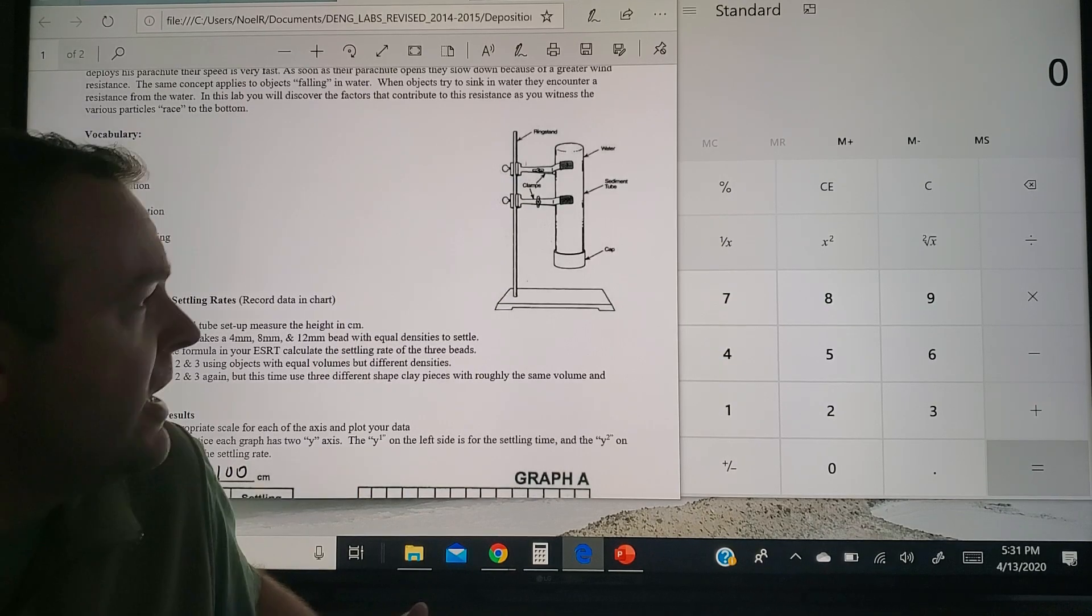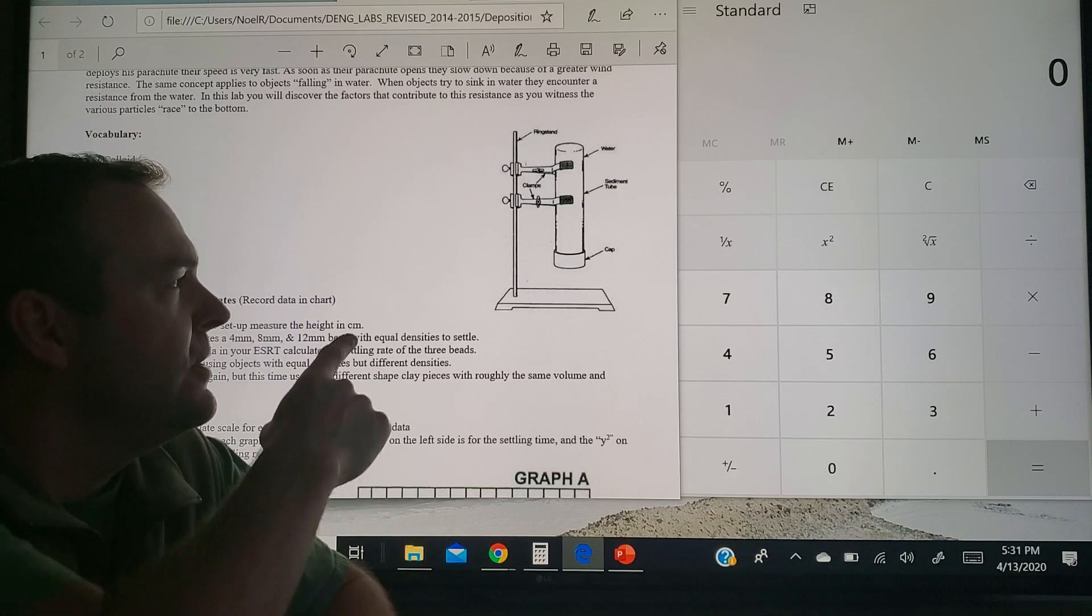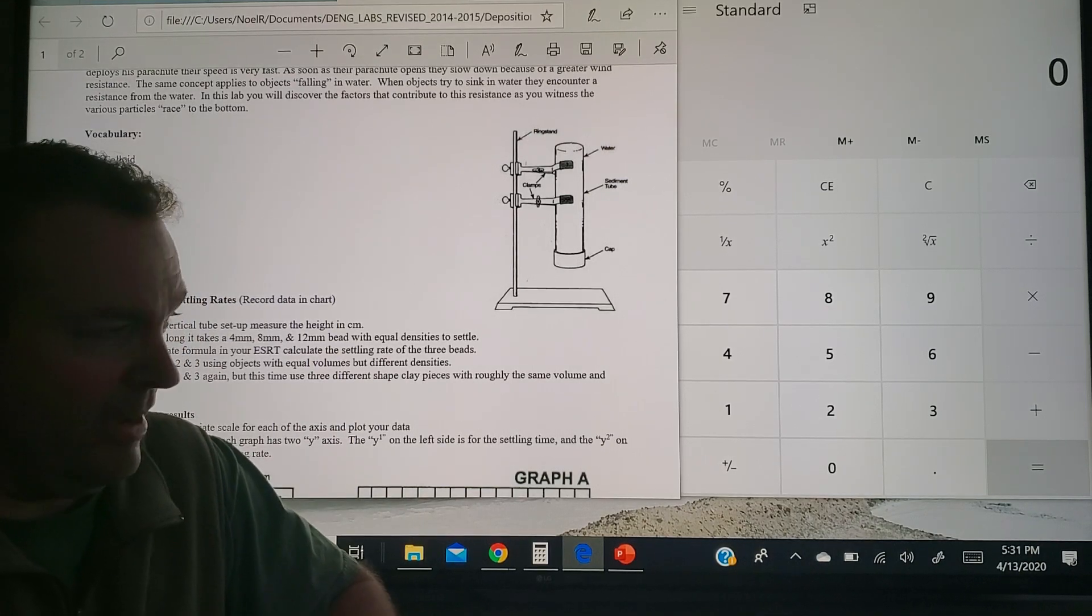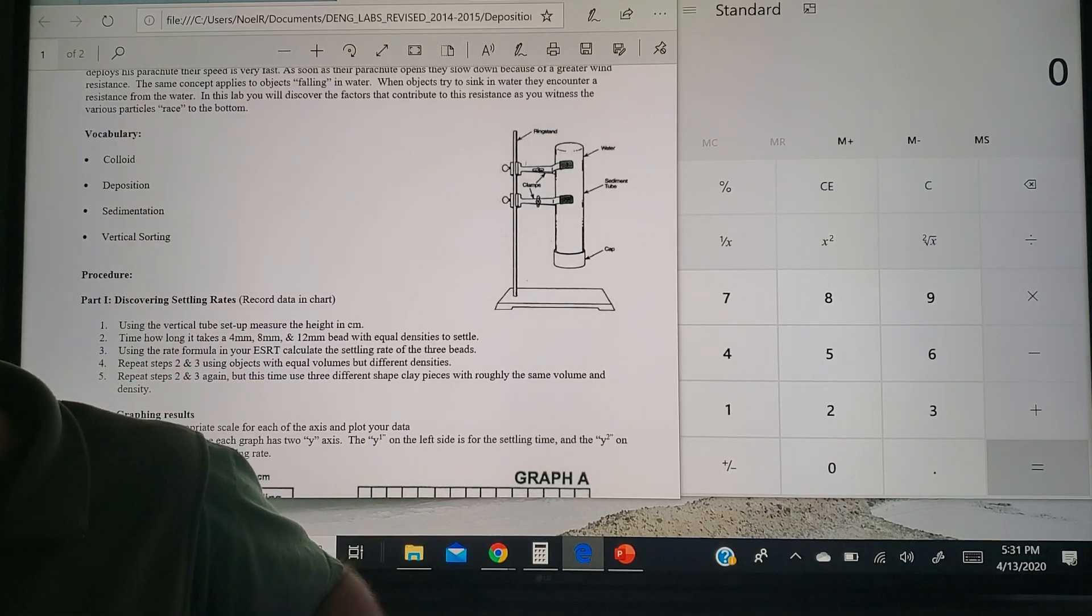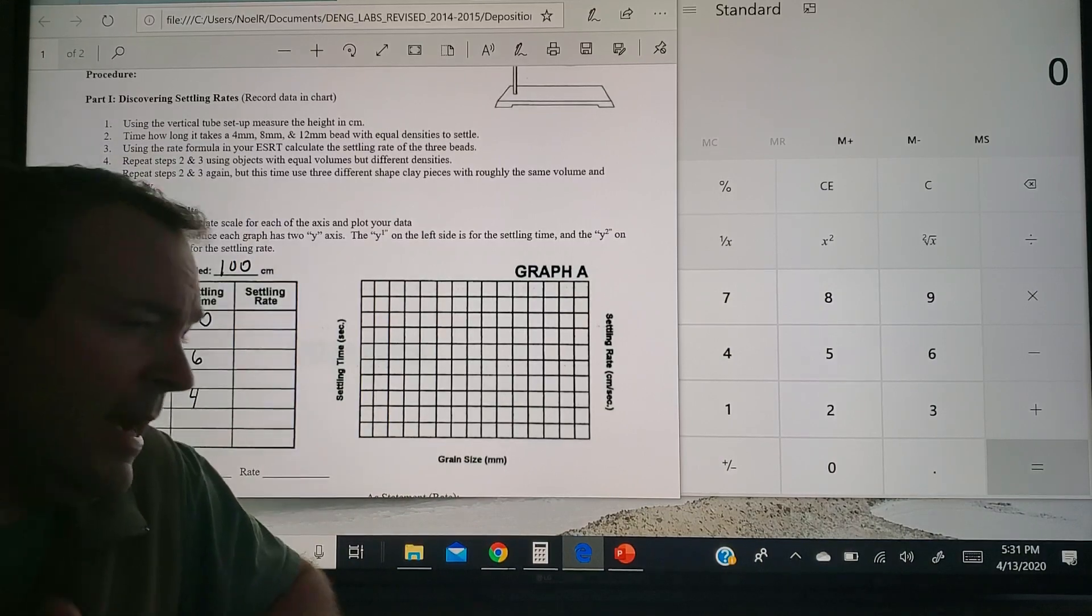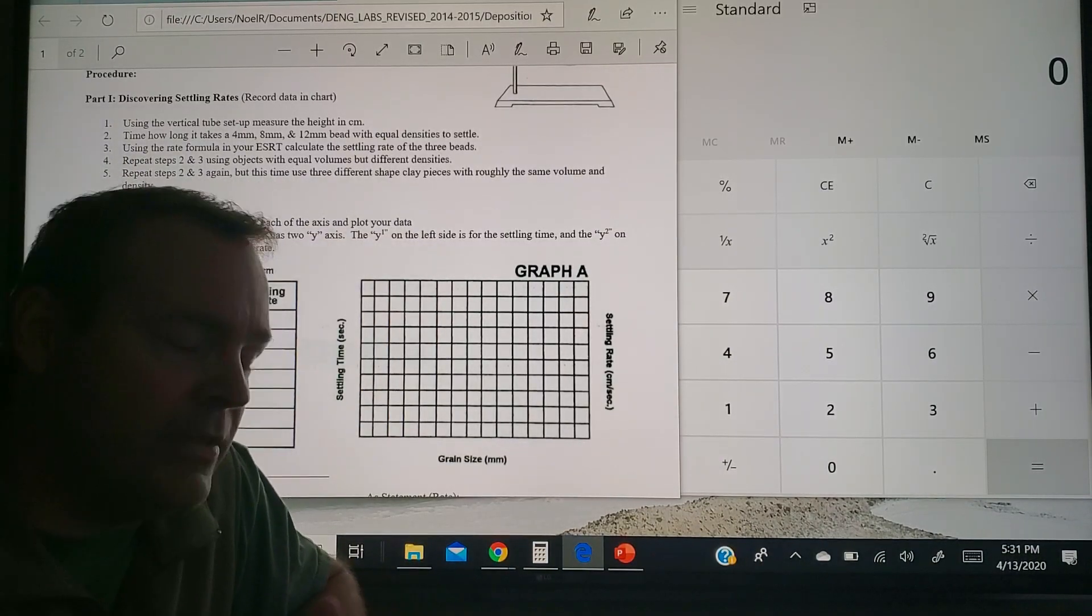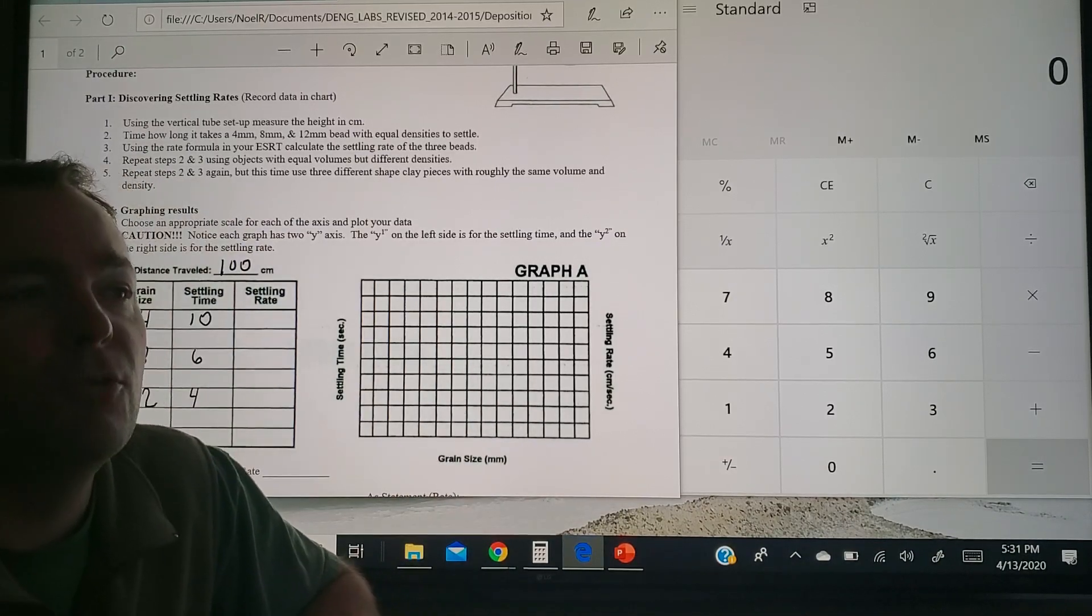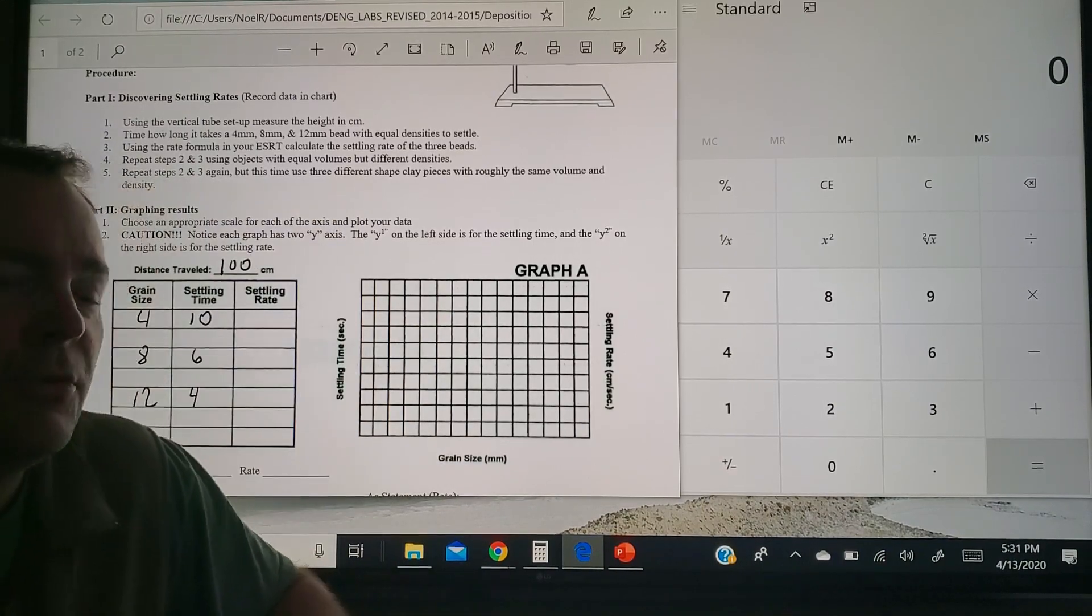Alright, this would have been the setup in class. We would have dropped all sorts of different particles down the tube, we would have had a timer, a data keeper, all that stuff, and that's where you would have gotten your data from. So the abbreviated data that I put down here was rough data that we've had over the years, collected from different classes. But again, this all would have been data that we collected in class in the front of the room, would have been a lot of fun, but we'll be back there soon enough.